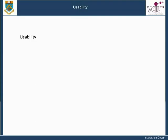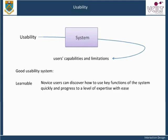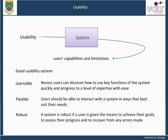Usability is about building a system that takes account of the user's capabilities and limitations. A system with good usability is likely to have the following qualities. Learnable: novice users can discover how to use key functions of the system quickly and progress to a level of expertise with ease. Flexible: users should be able to interact with a system in ways that best suit their needs. Robust: a system is robust if the user is given the means to achieve their goals, assess their progress, and recover from any errors made.